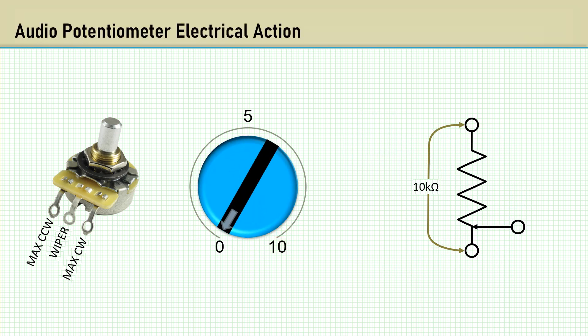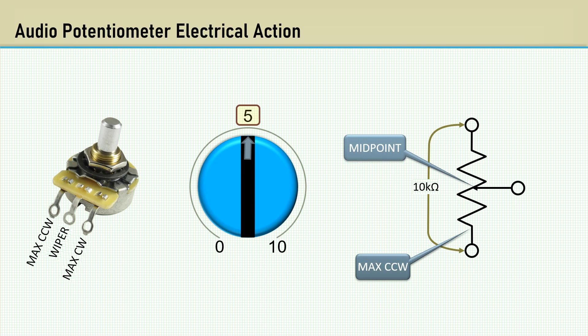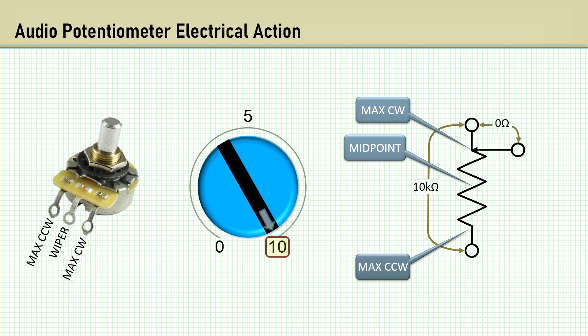Let's now take a look at the electrical action of an audio potentiometer, also having a resistance of 10,000 ohms. At position zero, the resistance between the wiper and the max counterclockwise is near zero ohms. You should read the full 10,000 ohms from the wiper to the max clockwise terminal. Turning the wiper to the mid position, we should read something like 800 ohms from the wiper to the max counterclockwise terminal, then the remainder of the 10,000 ohms from the wiper to the max clockwise terminal. Again, turning it up to 10, you should read near zero ohms from the wiper to the max clockwise terminal, and 10K from the wiper to the max counterclockwise terminal. It's clear that with the audio taper pot, the resistance varies gradually as it increases with clockwise rotation.